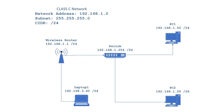For this topology, I have a wireless router, a switch, and three endpoint devices, or hosts. I'm using a Class C network of 192.168.1.0 with a subnet mask of 255.255.255.0, which can also be represented as a slash 24. The wireless router, switch, and PC1 are part of the same IP subnet, so they'll be able to communicate with each other.